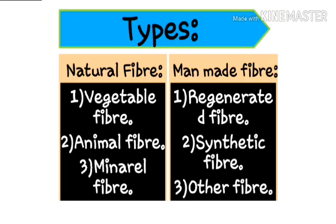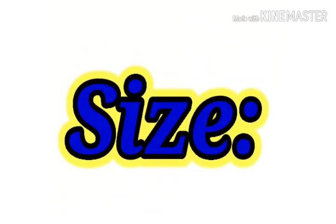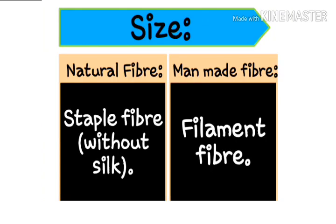Types: natural fiber has three types — number one, vegetable fiber; number two, animal fiber; number three, mineral fiber. Besides, man-made fiber also has three types: regenerated fiber, synthetic fiber, and other fiber.